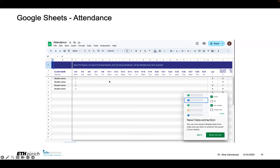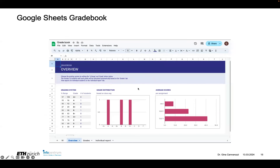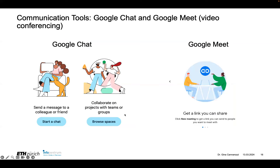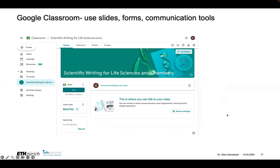Here's an example of the attendance spreadsheet. The gradebook spreadsheet has the possibility to make a report for individual students — you can keep the grades in it and generate some plots. The communication tools are Google Chat and Google Meet, similar to WhatsApp and Zoom respectively. You can chat with a group or a person, and these are all integrated into Google Classroom. You can make a classroom, give lectures online, have all documentation in Google Docs, give assignments as Google Docs, keep track of everything in spreadsheets — and some of that is automatic.